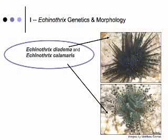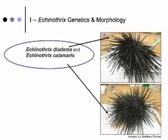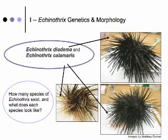There are two nominally recognized species of Echinothrix. They look overall quite similar and can be difficult to distinguish in the field. This is especially true for the dark morph of Echinothrix calamaris, which can be easily confused with the typically dark Echinothrix diadema. There is also some confusion because both dark and white morphs of Echinothrix calamaris exist, including in Hawaii, and it has been suggested by other researchers that these different color morphs are actually different species.